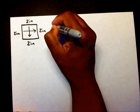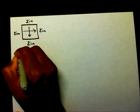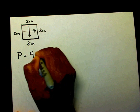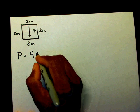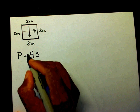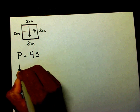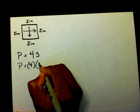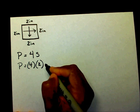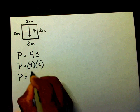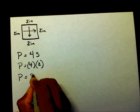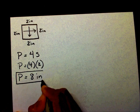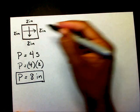Since the side is two, I'm going to write p equals four times s, where s stands for side. So p equals four times two, which is eight inches. That is the perimeter of this square.